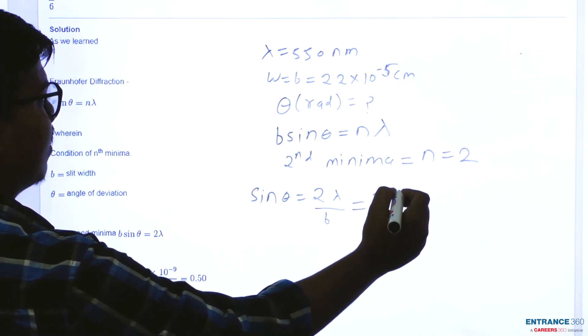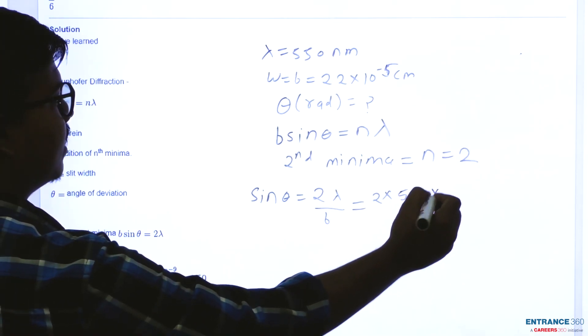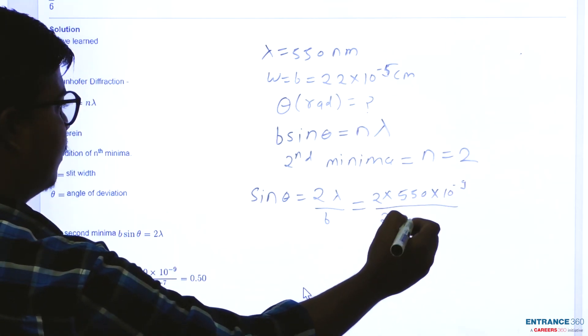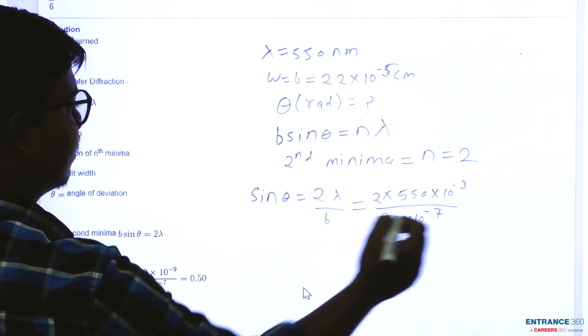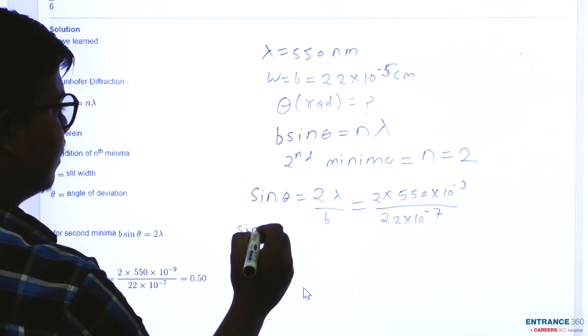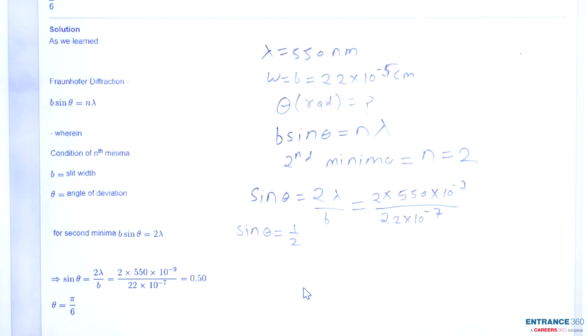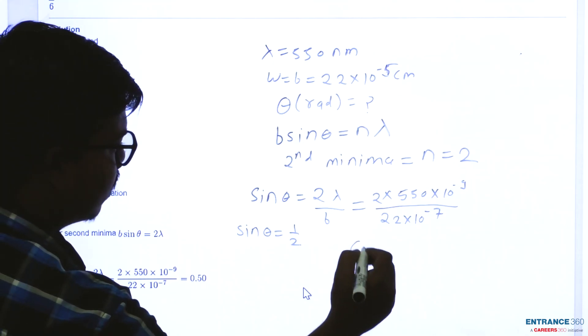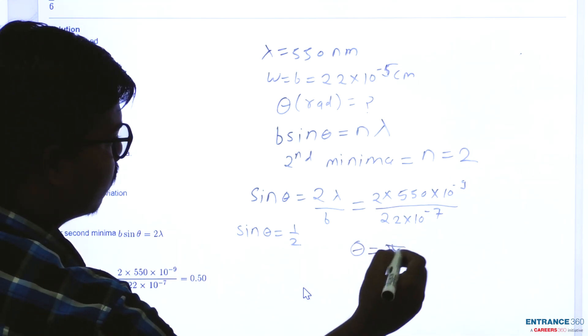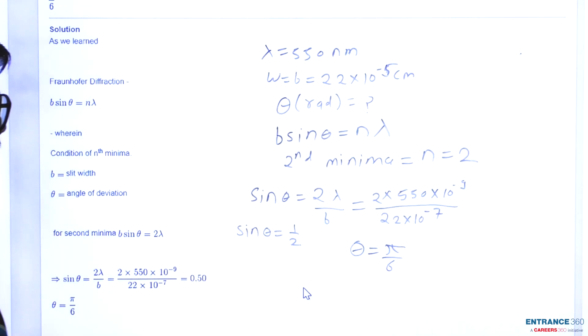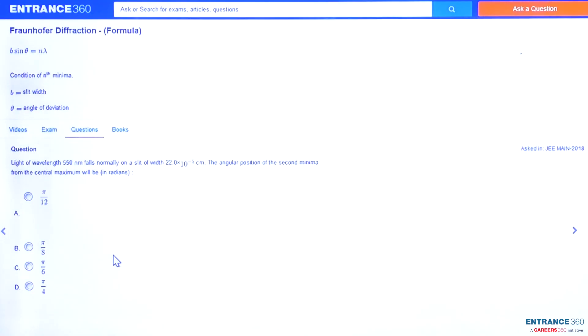That's 2 into 550 nanometers, which is 10 to the power minus 9 meters, divided by 22 into 10 to the power minus 7. This gives us sin theta equal to 1 by 2. We know sin theta equals 1 by 2 at theta equal to 30 degrees or pi by 6 radians. The correct answer is option C.